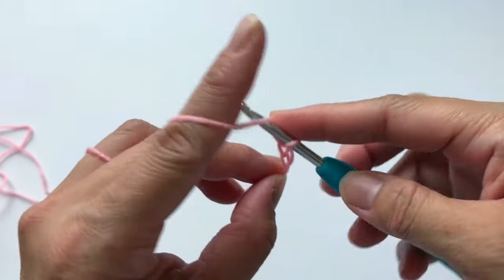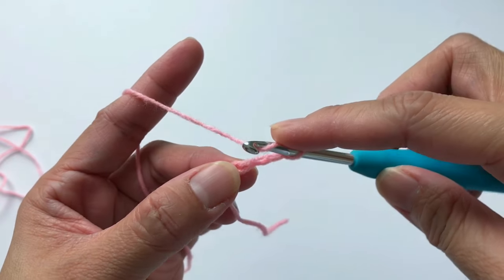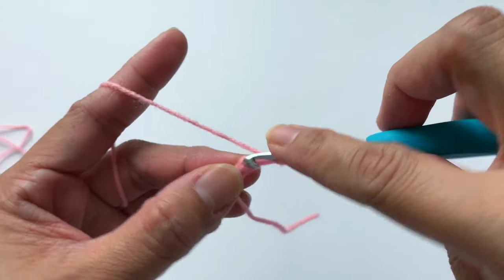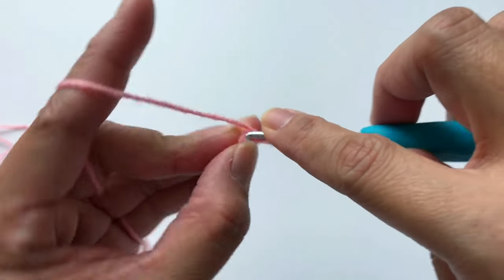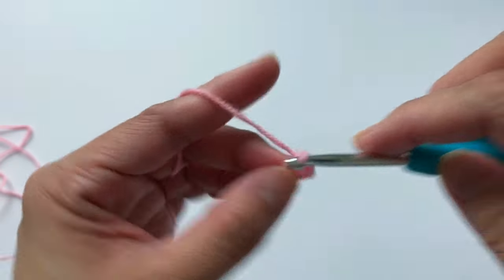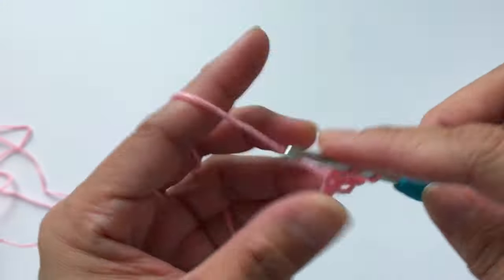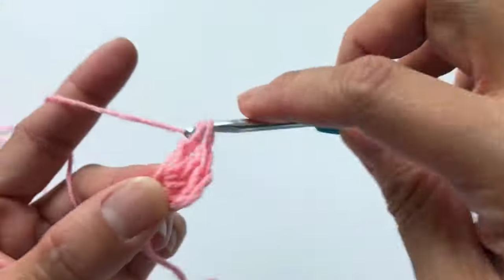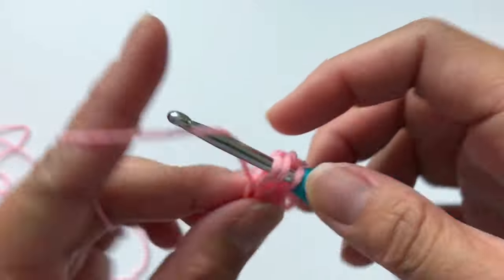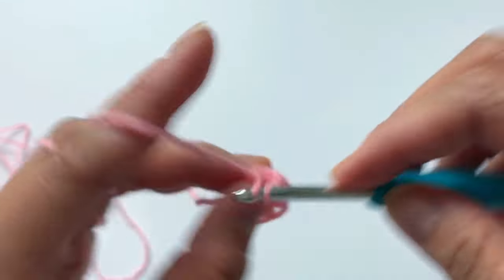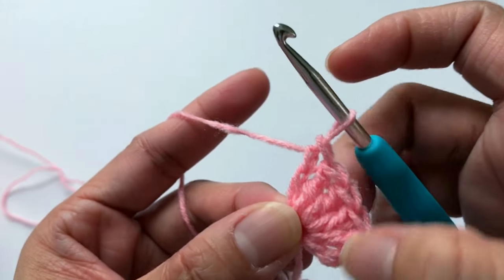And we're going to make 5 double crochet at the first stitch. So 1, 5th double crochet.